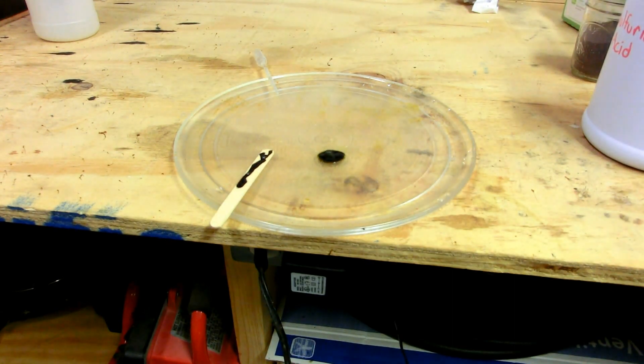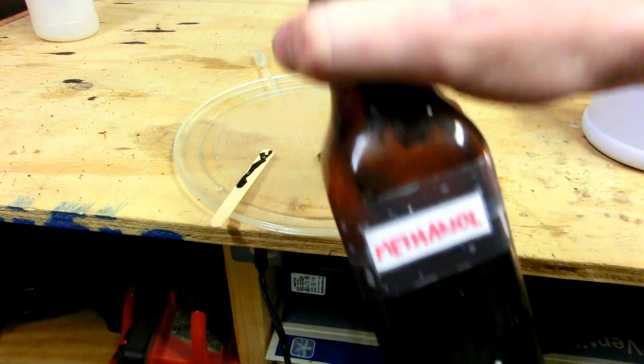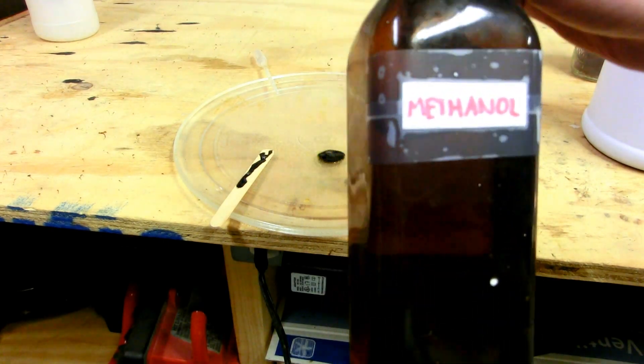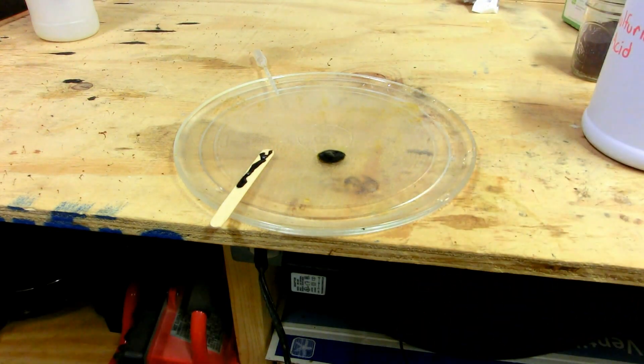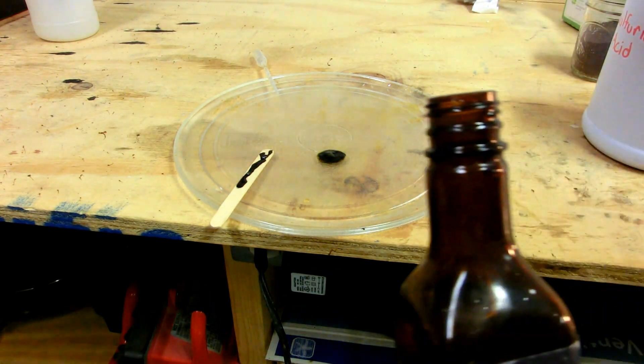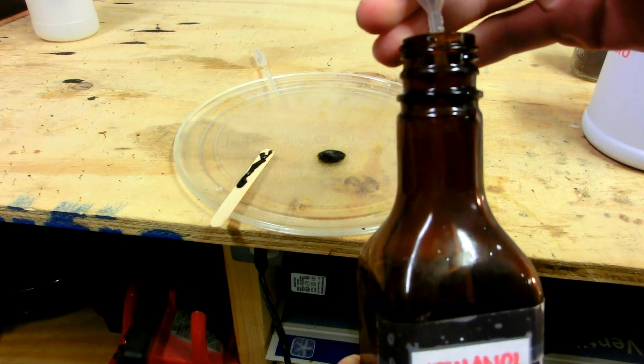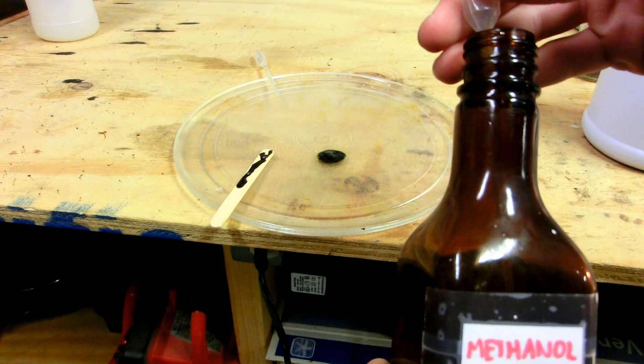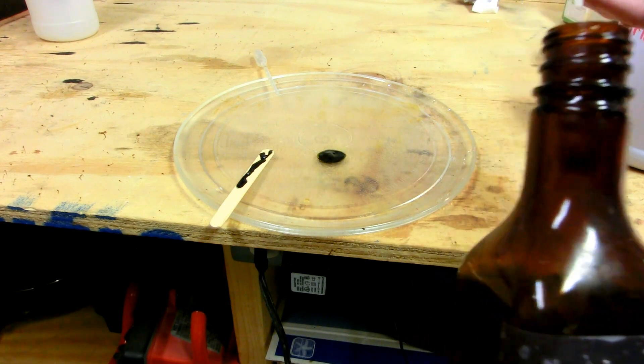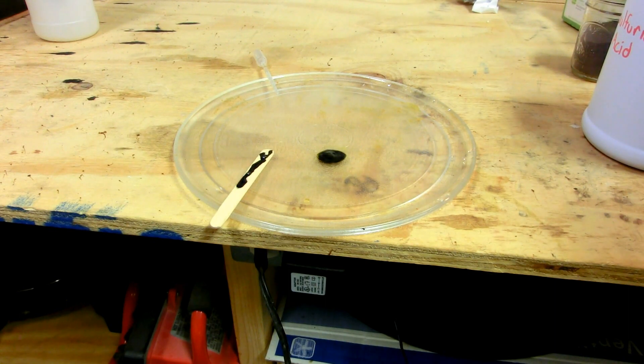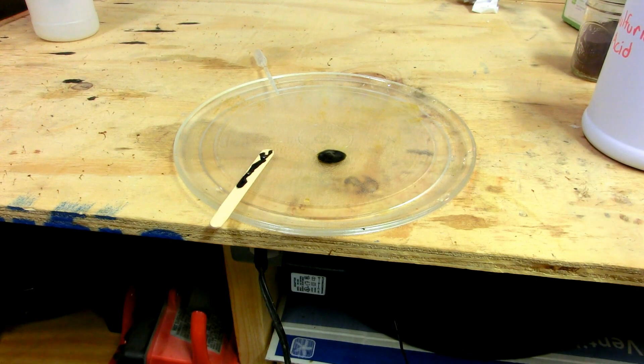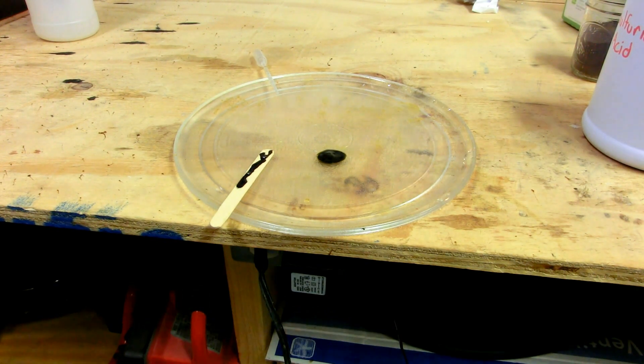Anyway, so here I have my bottle of, should be anhydrous methanol. I've distilled it over a desiccating agent and I'm going to get some in this pipette over here and then we're going to drop it onto the manganese heptoxide and we should expect a more violent reaction because methanol is not only much more flammable because of its lower flash point, but also should be more reactive since it's a smaller, simpler alcohol. So here we go.